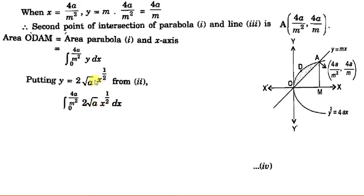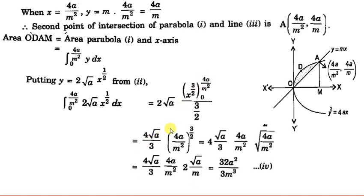We substitute and integrate. 2√a is constant and can be taken outside the integration sign. The integral of x^(1/2) is x^(3/2) divided by (3/2). We put the upper limit: (4a/M²)^(3/2). This gives 4√a/3. Now (4a/M²)^(3/2) can be broken as (4a/M²)¹ × (4a/M²)^(1/2), so we can write it as 4√a/3 × (4a/M²) × √(4a/M²).